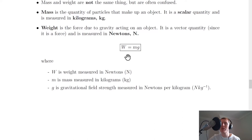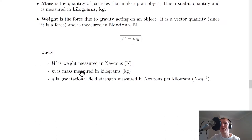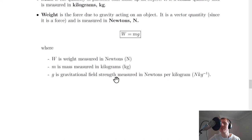Remember the relationship: W = mg, where W is weight in newtons, m is mass in kilograms, and g is the gravitational field strength in newtons per kilogram. On Earth, g always takes a value of 9.8 N/kg, but it will vary depending on which planet you're on.